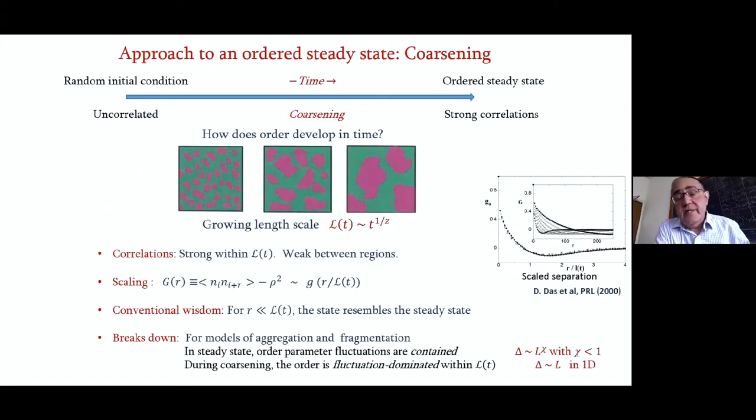Let me remind you about coarsening. This refers to an approach to steady state. We start out with a very high temperature random initial condition, let time pass, and we believe that after a long time we'll approach a steady state. I'm interested in steady states that show a degree of order. So we go from an uncorrelated initial state to a state with strong correlations, and the process by which we do it is called coarsening.